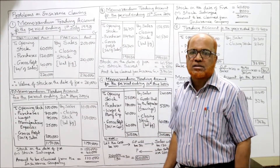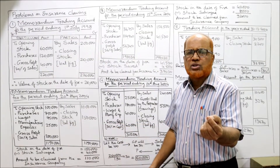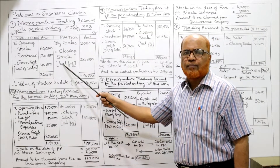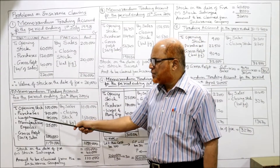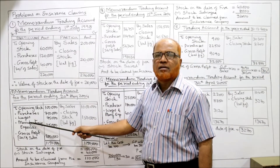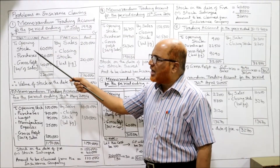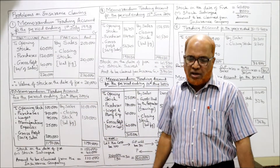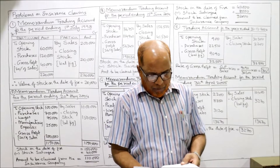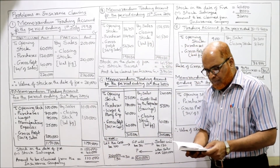To summarize the difference between problems one and two: in problem two, salvaged stock is given and must be deducted, and extra direct expenses — wages and manufacturing expenses — are included on the debit side, whereas in problem one there are no such direct expenses.